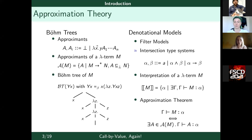We define the Böhm tree of a term as the supremum of its approximates. We can see it as a potentially infinite tree. The study of the term comes with the study of finite parts of the tree. This notion of Böhm tree was developed by Barendregt in the eighties, and it is really central. On the other hand, we have denotational models.